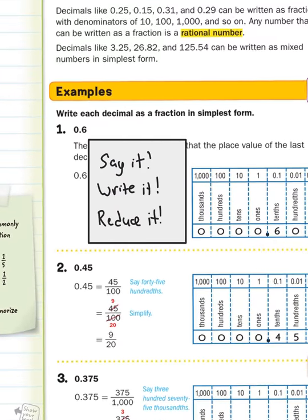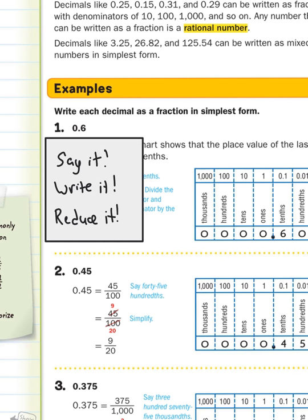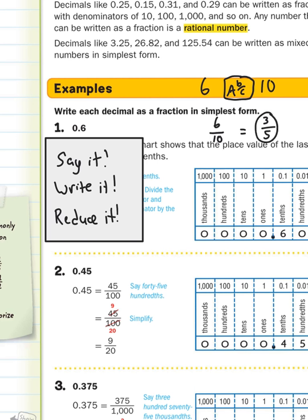In example one, we have to change the decimal 0.6 into a fraction. I'm going to show you how these three steps work: say it, write it, reduce it. The first thing you do is say this decimal — don't say 'zero point six,' that won't help you. You have to say 'six tenths.' That's step one. Now I'm going to write that as a fraction: six tenths. And last, you reduce it. You could reduce this in your head, or type it in your calculator using the fraction button — which looks like ABC. Type in six, fraction button, ten, hit enter, and it reduces to three-fifths. That's your final answer.